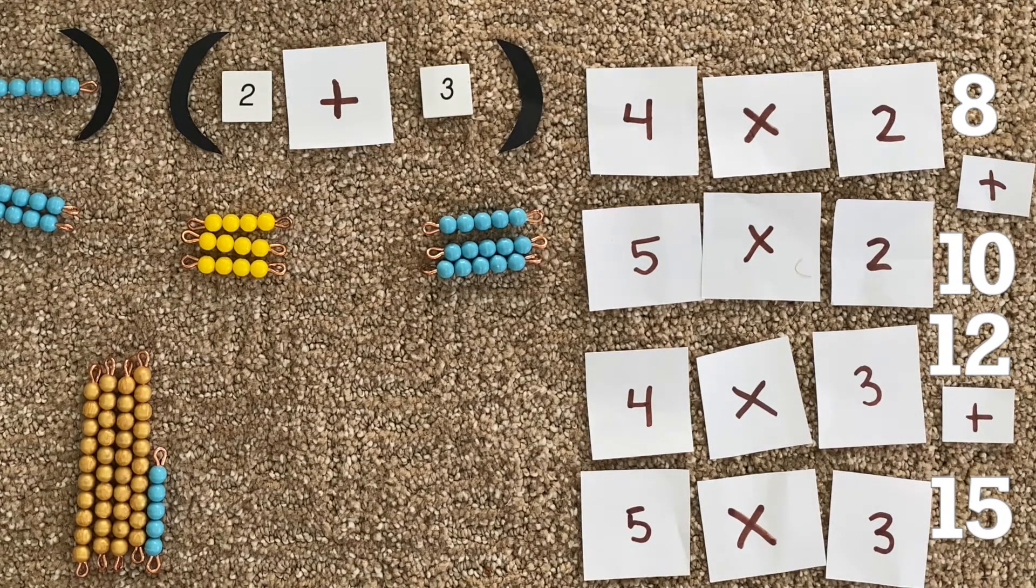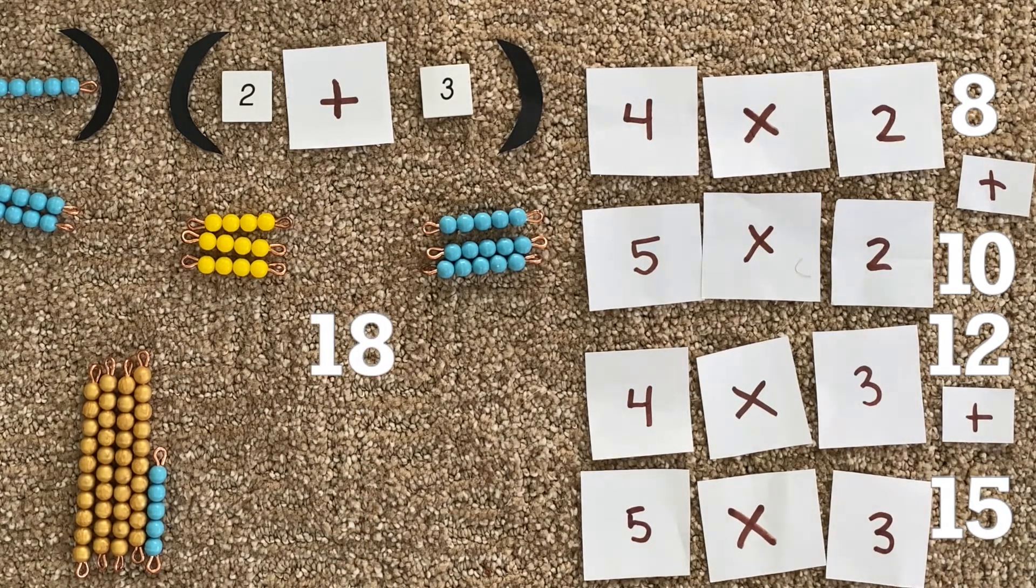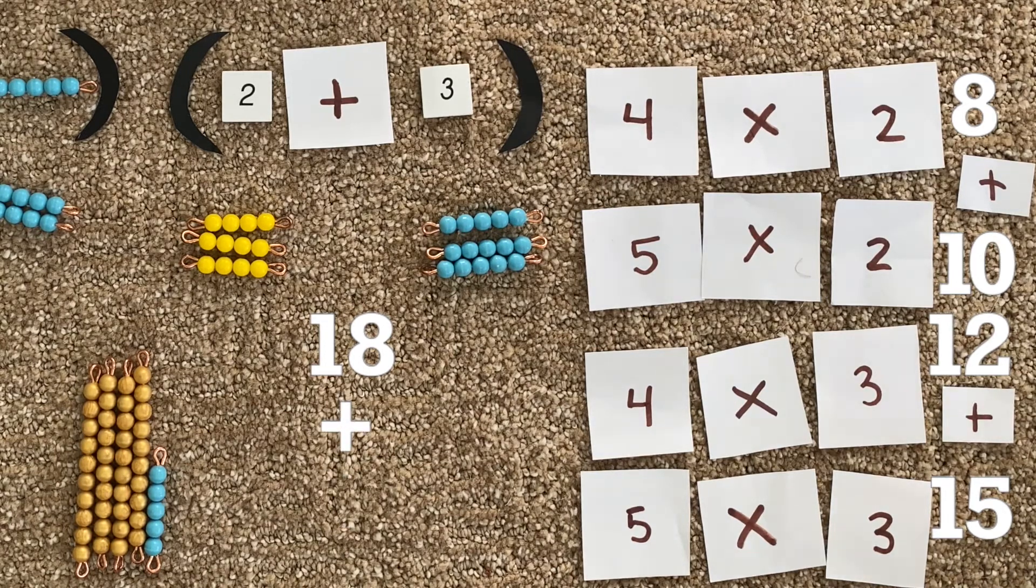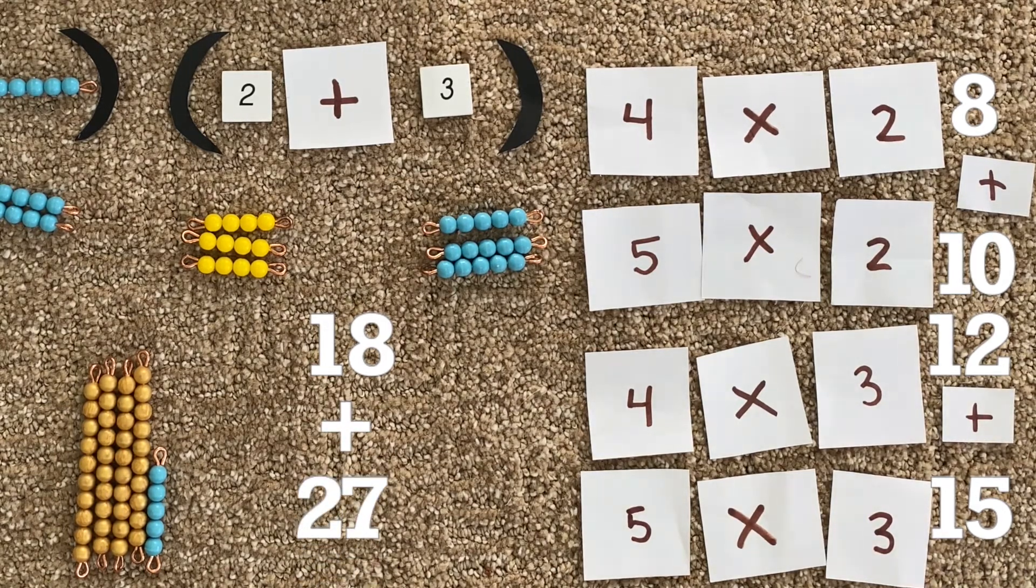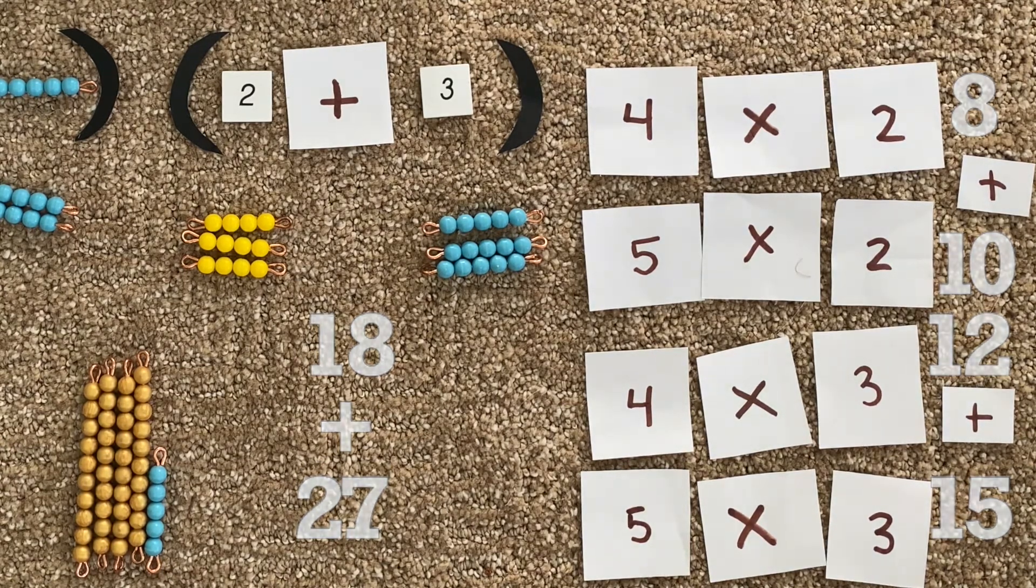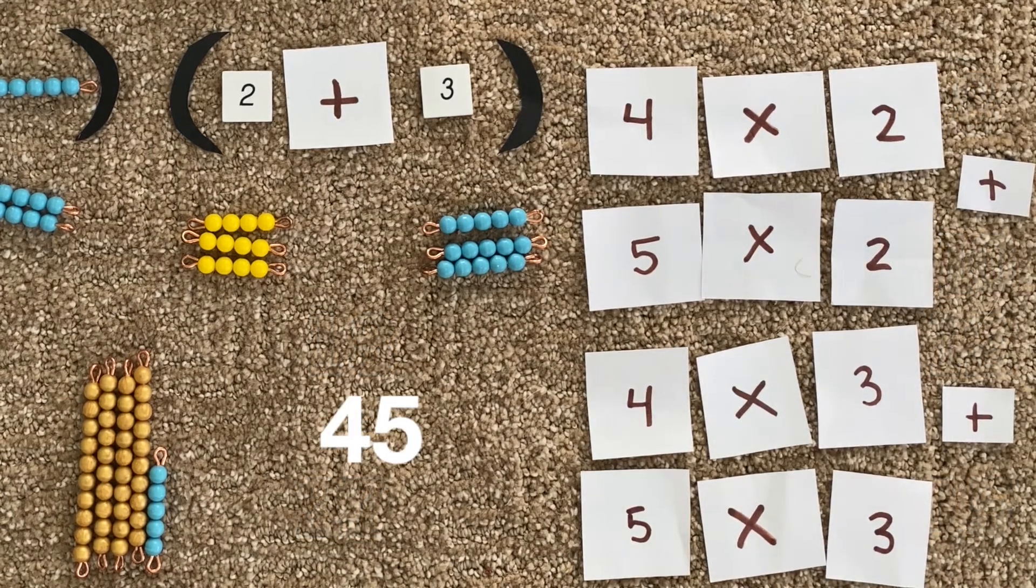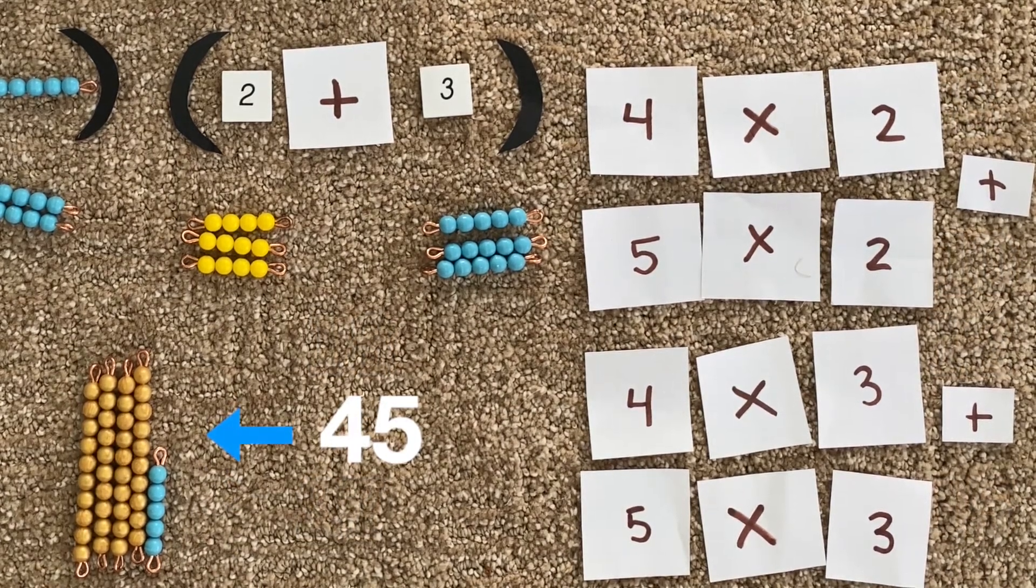Eight and ten is eighteen. Twelve plus fifteen is twenty-seven. And can you add eighteen and twenty-seven in your head? Yes, the answer is forty-five. Does that match up with our product over here? Certainly does.